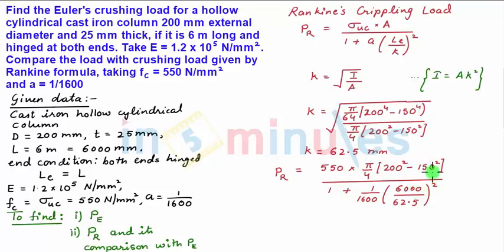Upon solving this, we get PR equal to 1.118 into 10 to the power 6 newton, which is equivalent to 1.118 mega newton.